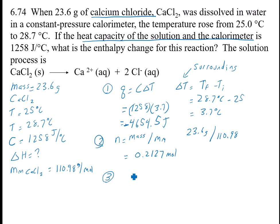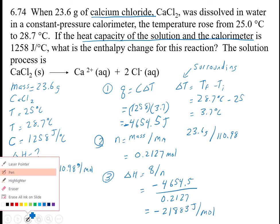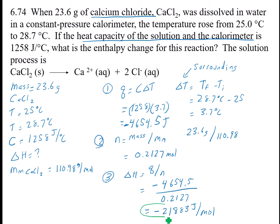Step three is to find delta H. Delta H is Q divided by N. So it's going to be negative 4,654.5 divided by 0.2127, and I get negative 21,883 joules per mole. And that is my final answer.